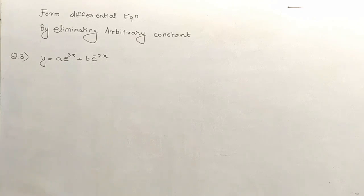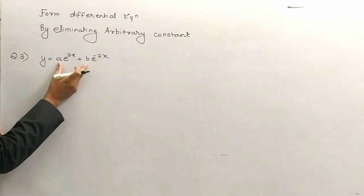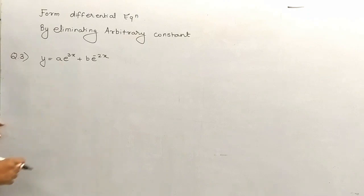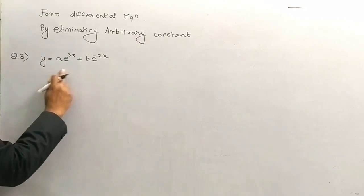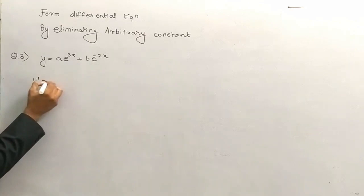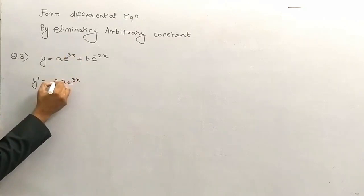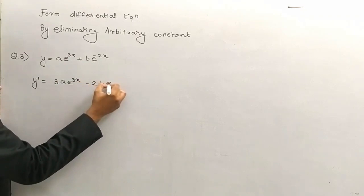The third question aapke saamne hai. I think to form the differential equation it's quite difficult to kill the constant, because here e raised to 3x ka derivative e raised to 3x hota hai. Just think about it — we have to resubstitute. It is a quite lengthy one because the powers are different. Still I can kill the constant but you need to take care of resubstitution. So let's take the first derivative.